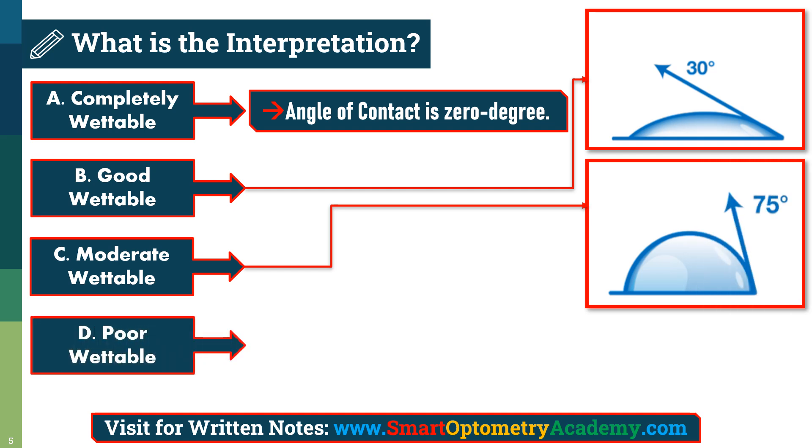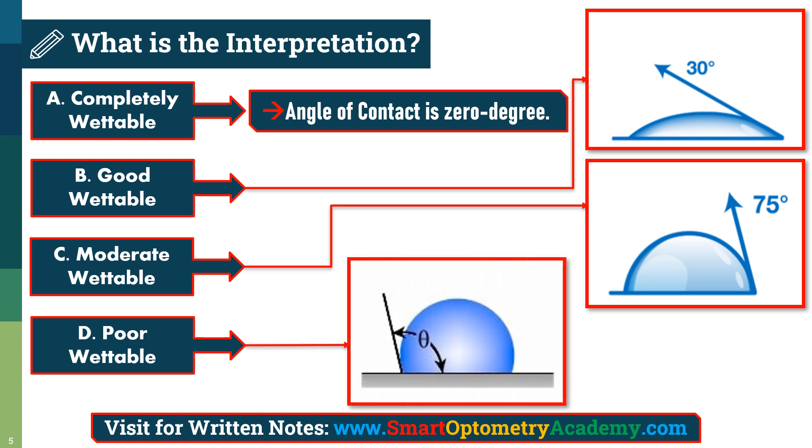Poor wettable materials. When the angle of contact is more than 90 degrees.